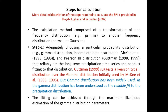The chosen probability distribution should reliably fit the long-term precipitation time series. Guttman (1999) suggests a Pearson Type 3 distribution over the gamma distribution initially used by McKee et al. in 1993. However, the gamma distribution has been widely used and understood as a reliable fit to the precipitation distribution.